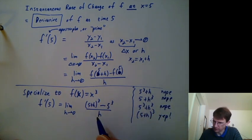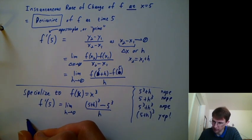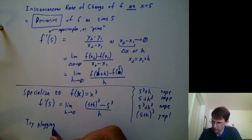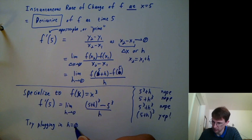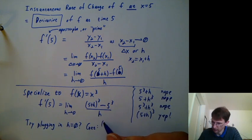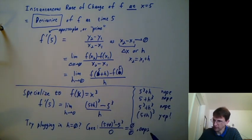What if I just plug in h equals 0 if I want really small h's? Well, 0 is about the smallest you can get. Think for a sec. What do you get there? You'd get 5 plus 0 cubed minus 5 cubed over 0, which ends up being 0 over 0, which actually doesn't tell us anything.